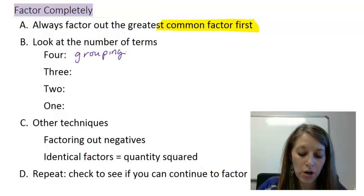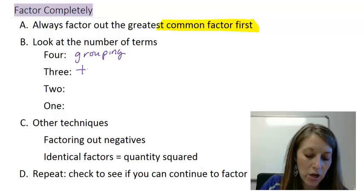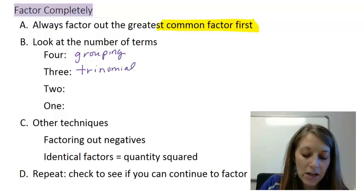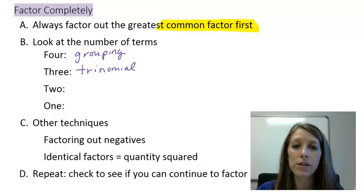If it has three terms it is a trinomial. The prefix tri means three. We factor it by doing the opposite of foiling. We set up our two sets of parentheses and try to come up with our two binomials.